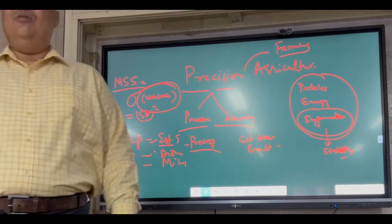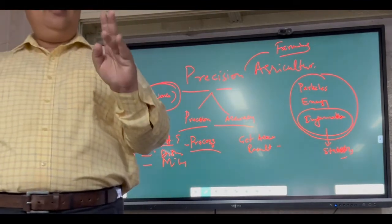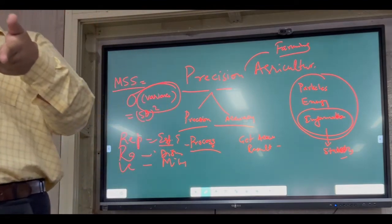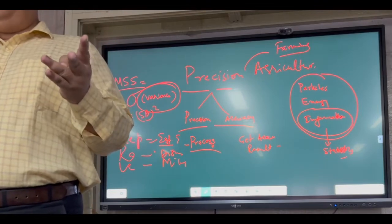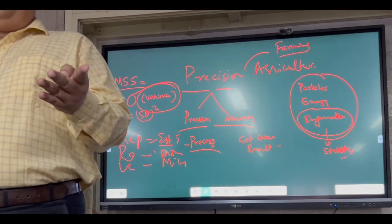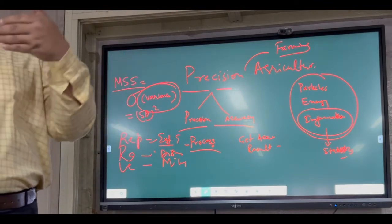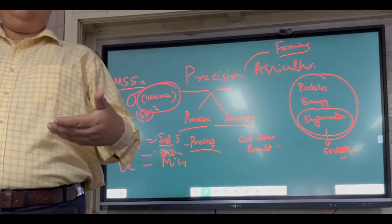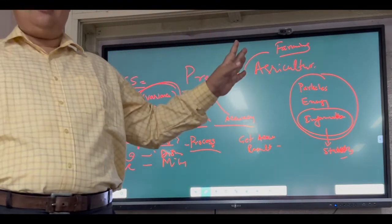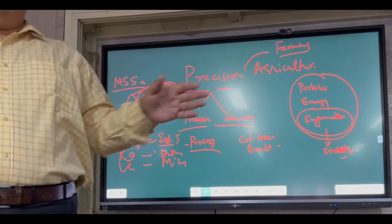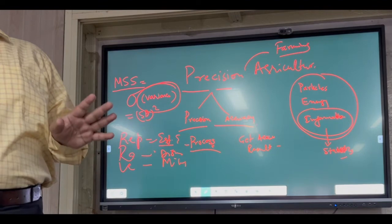This is the objective: estimate error, distribute error, and reduce or minimize error. Replication, randomization, and local control. We try to reduce variance through all these methods. But replication is not responsible for reducing variation directly. It only defines the error in the experiment.